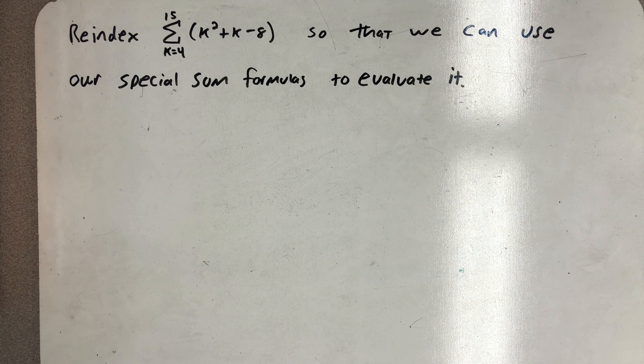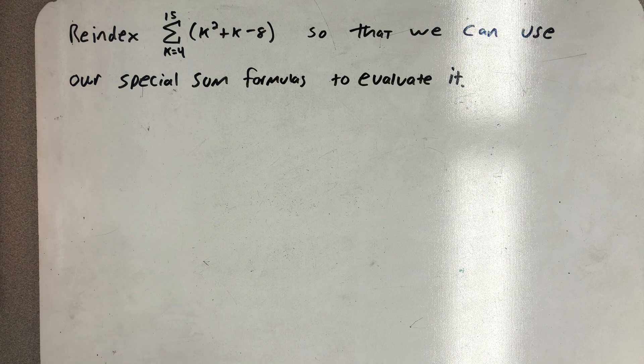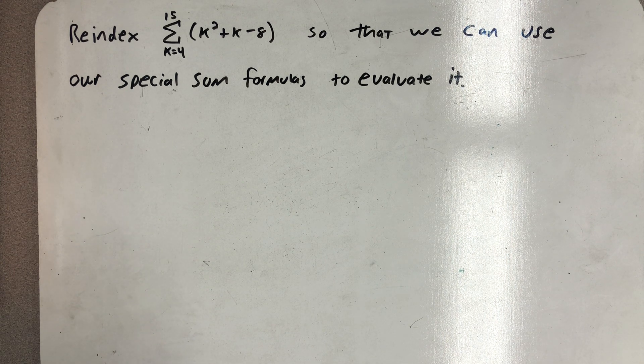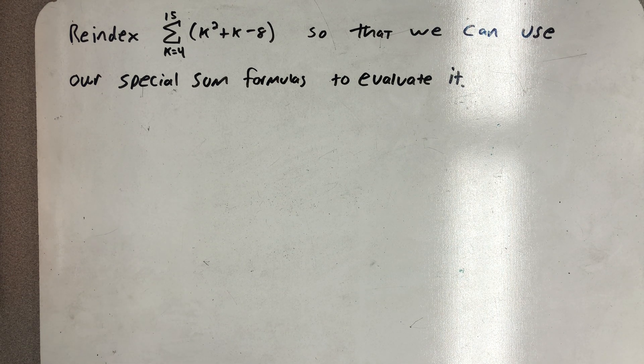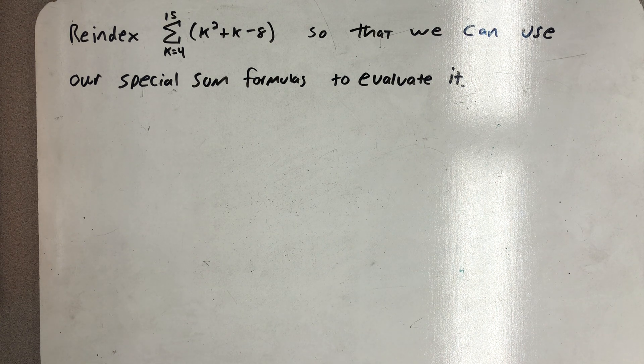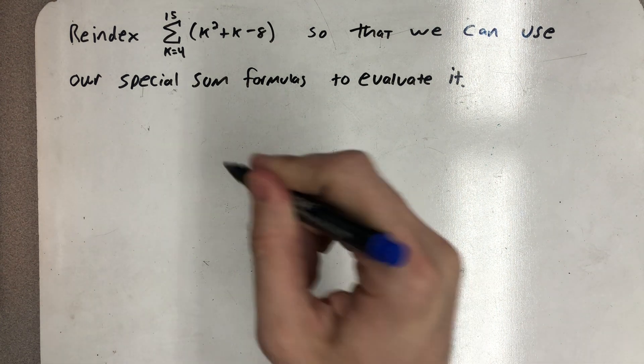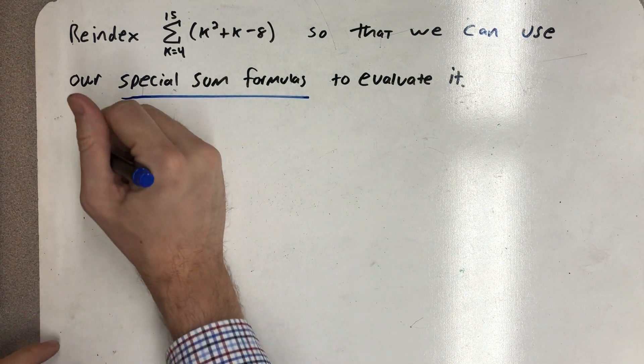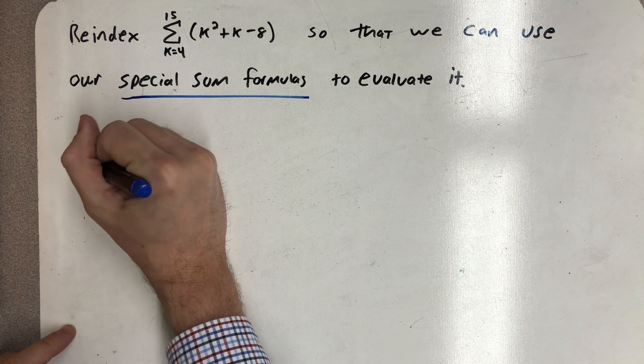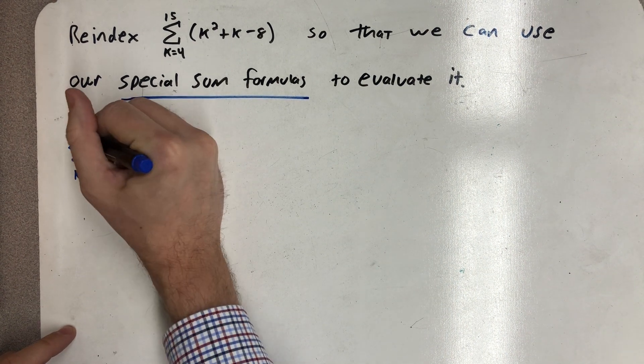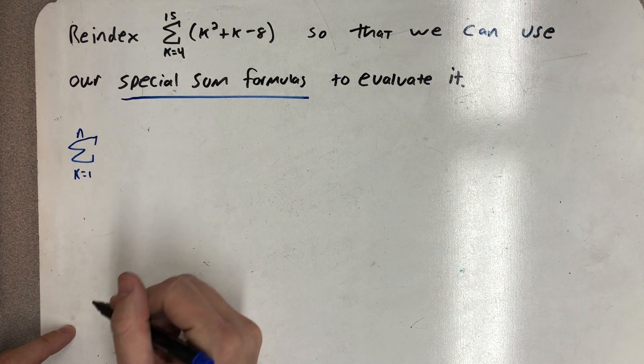Reindex the sum from k equals 4 to 15 of k squared plus k minus 8, so that we can use our special sum formulas to evaluate it. The idea here is we have three special sum formulas that we know, and they all apply to sums that go from k equals 1 to some number.